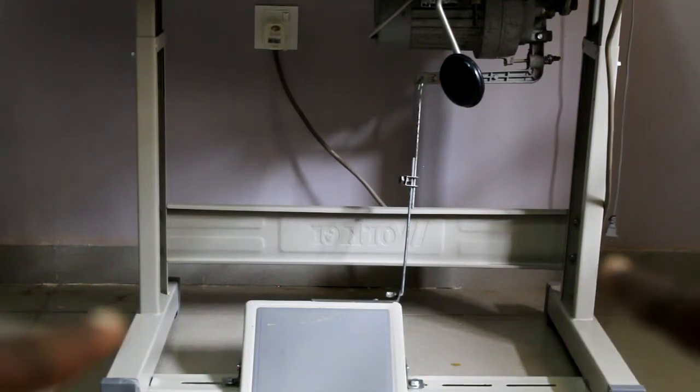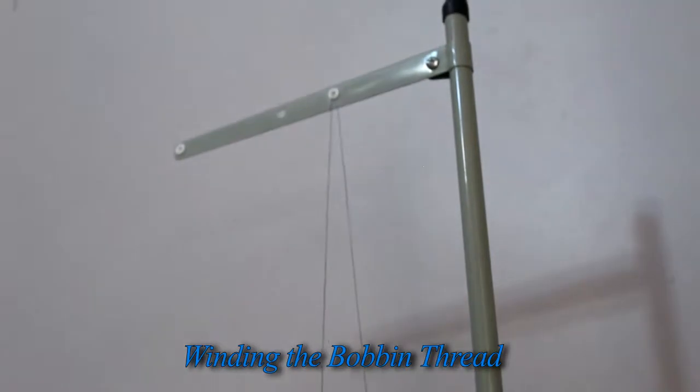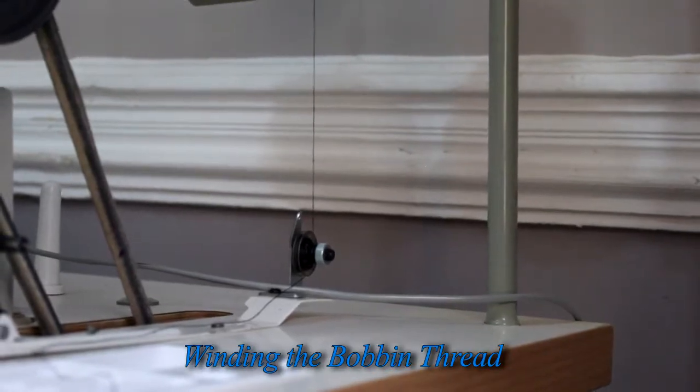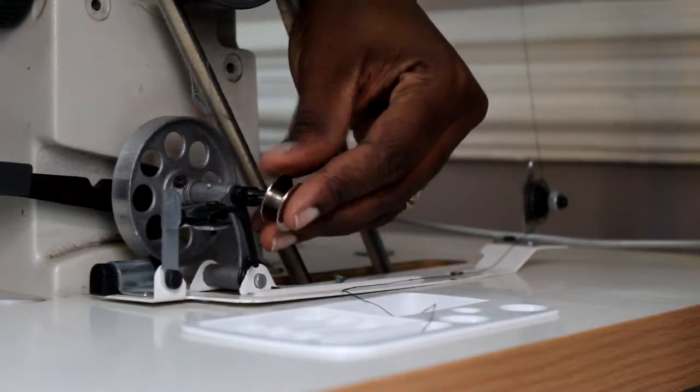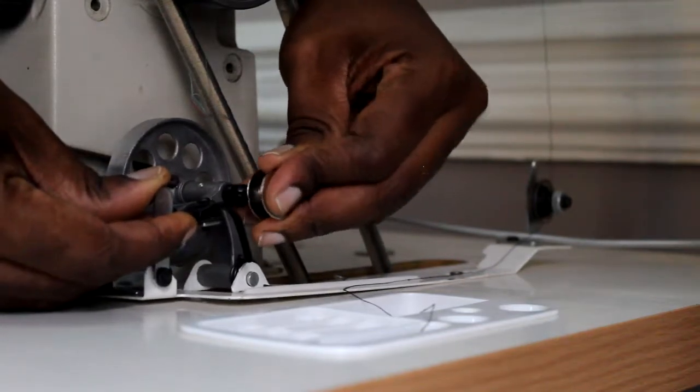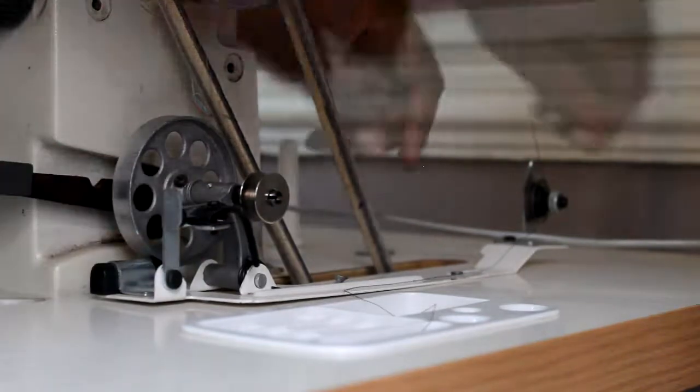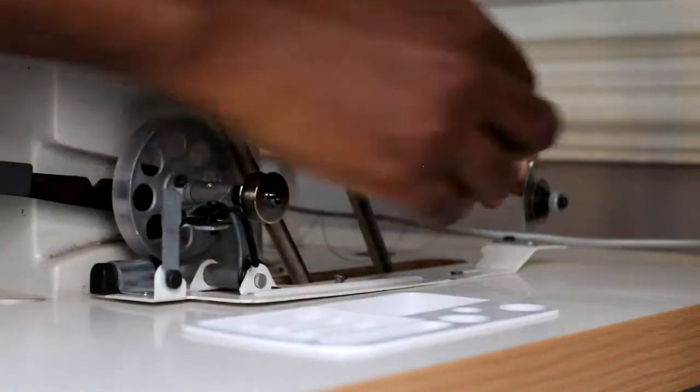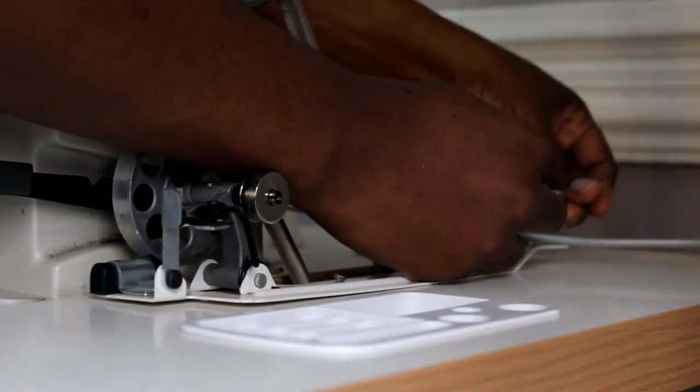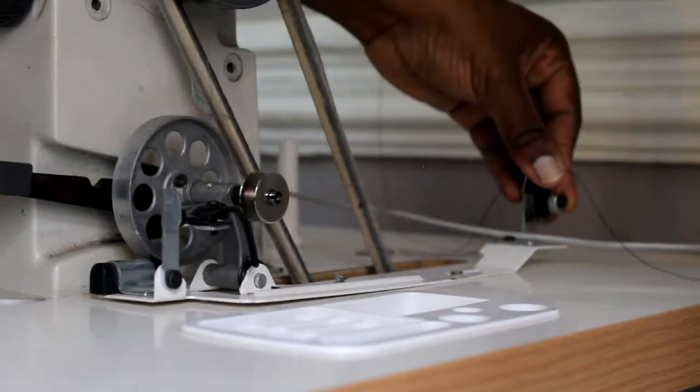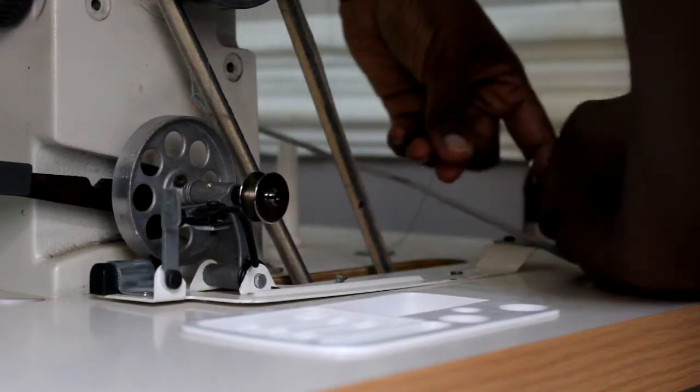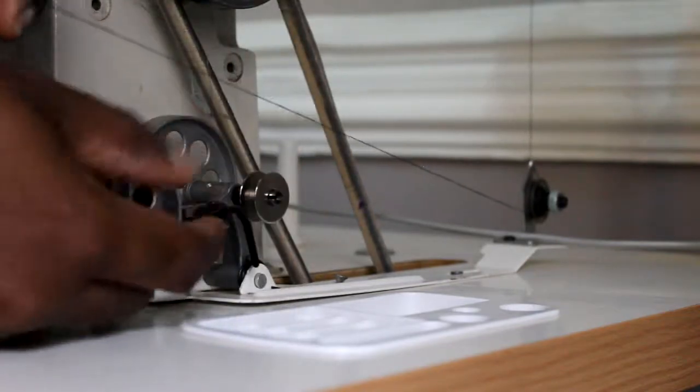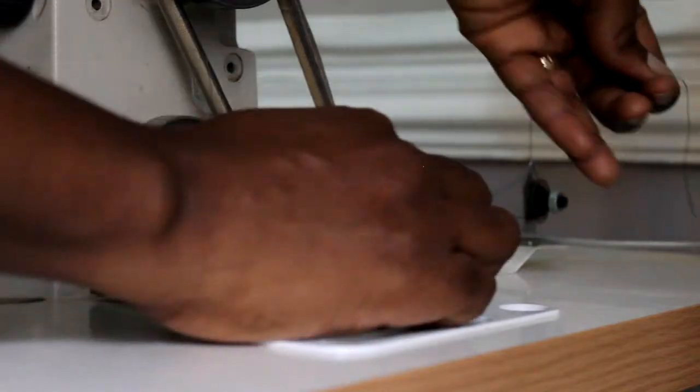Now winding your bobbin: first we'll put the thread on the thread spool, guide it through the thread guides all the way down. Here's the bobbin itself. I'll put that on the bobbin winder—mine is a little tight. First I'm going to pass it through a thread guide here before taking it around the tension spring here, and then finally around the bobbin. We'll go from underneath bobbin.